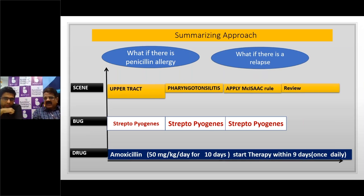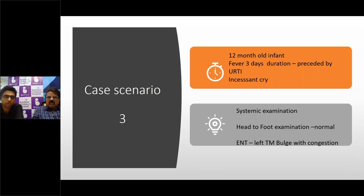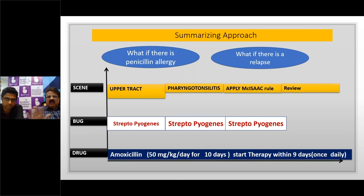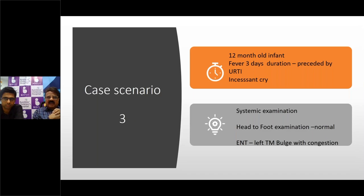In case of relapse, we can give amoxicillin-clavulanate because the oropharyngeal flora gets altered as the number of infections increases; amoxiclav is considered for children with acute-on-chronic tonsillitis or recurrence. To summarize: use McIsaac's criteria — if viral, observe; if score is four or more and bacterial, start antibiotic immediately; if in between, do the rapid streptococcal antigen test. After 48-72 hours if fever continues, do a culture before changing the antibiotic.